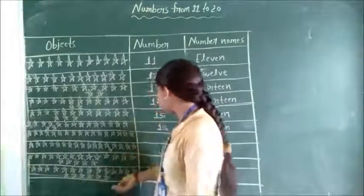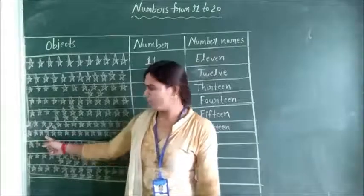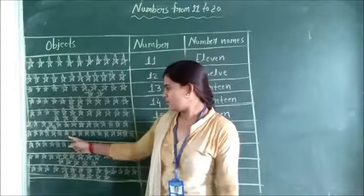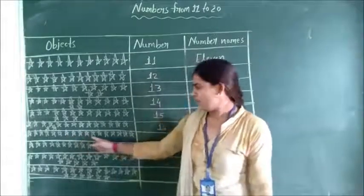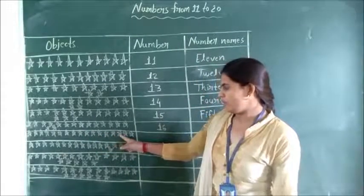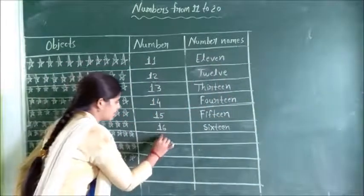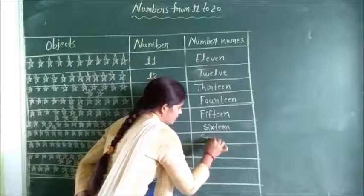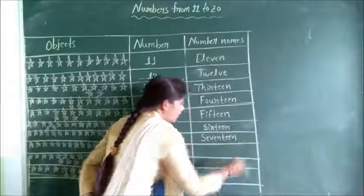Again count: 1, 2, 3, 4, 5, 6, 7, 8, 9, 10, 11, 12, 13, 14, 15, 16, 17. How many stars? 17. Write: 1, 7 — 17. S, E, V, E, N, T, E, E, N. Seventeen. 17.